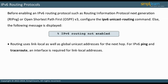Routing uses link local addresses for the next hop, which means the routing table includes link local as well as global unicast addresses. For IPv6 ping and traceroute, an interface is required for link local addresses. Add a percentage sign with the full designation of the interface to the link local address.